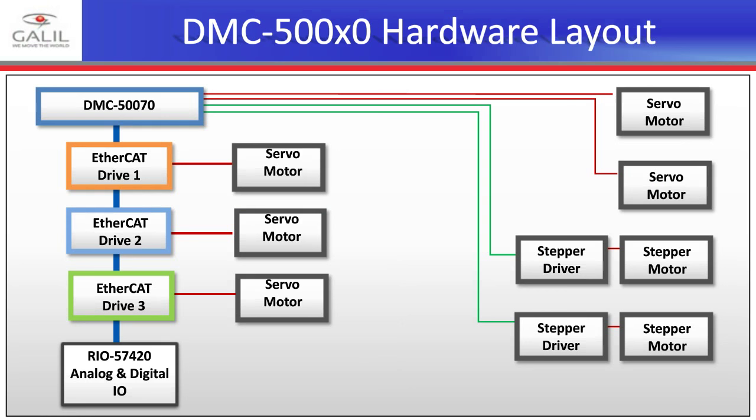An example of a DMC-50,000 hardware layout — kind of the kitchen sink — shows the capabilities of the 50,000 across multiple platforms. In this case: three EtherCAT drives with servo motors, a RIO 57,000 for EtherCAT I/O — that's your EtherCAT network. On the right, servo motors are controlled via plus/minus 10-volt control signals, and stepper drivers are controlled via TTL step and direction. This is perfectly feasible for an application that needs both centralized and distributed control.